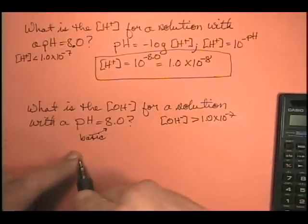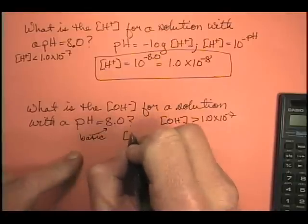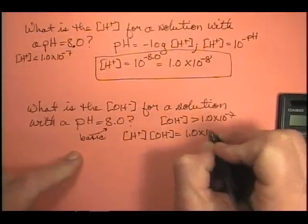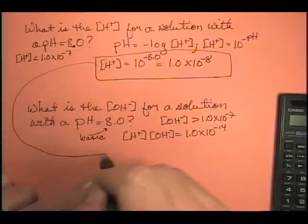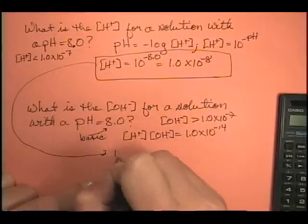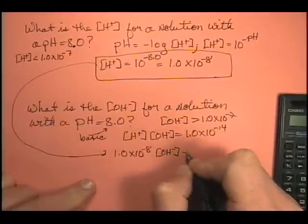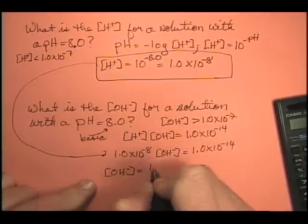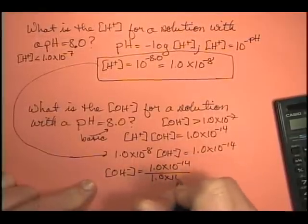Hydroxide ion concentrations are greater than 1.0 times 10 to the minus 7 for basic solutions. We also know that the hydrogen ion concentration times the hydroxide ion concentration is equal to 1.0 times 10 to the minus 14. We already calculated the hydrogen ion concentration from above, so: 1.0 times 10 to the minus 8, times my hydroxide ion concentration, equals 1.0 times 10 to the minus 14. Let's do our algebra — hydroxide ion concentration equals 1.0 times 10 to the minus 14 divided by 1.0 times 10 to the minus 8.